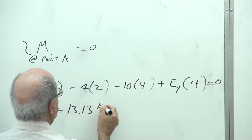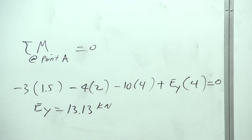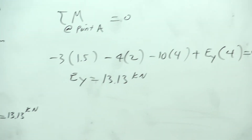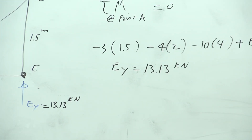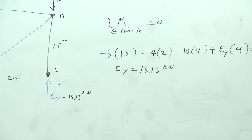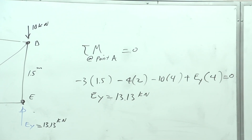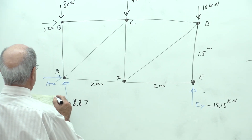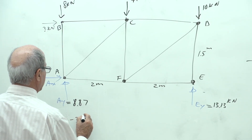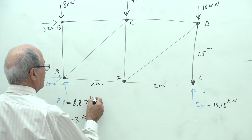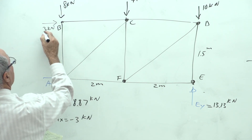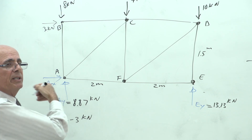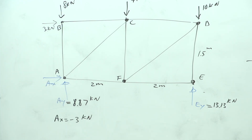Once Ey = 13.13 kN is found, the other reactions follow from equilibrium: Ay becomes 8.87 kN, and Ax comes out as minus 3 kN — meaning the direction we assumed was wrong; Ax actually points to the left. Remember: always draw unknown forces in the positive direction initially. The sign tells you the true direction.